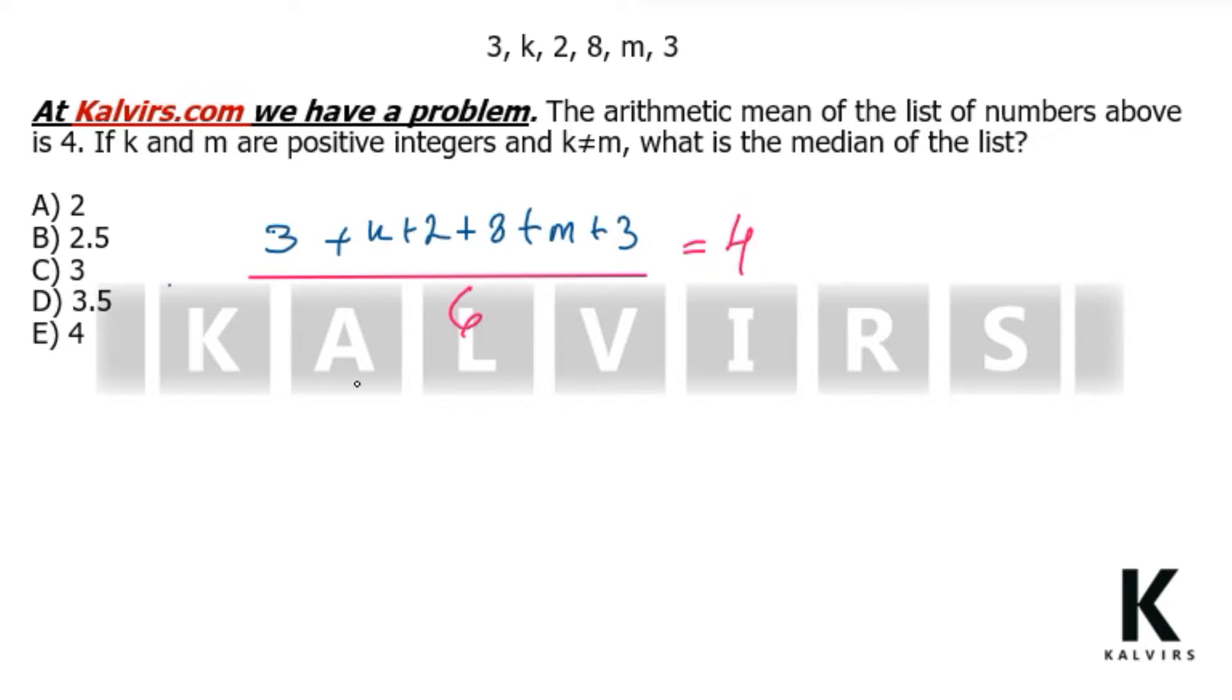If we solve this, we have 3 plus 2 is 5, plus 8 is 13, plus 3 is 16. 16 plus k plus m is equal to 24. It means that k plus m is equal to 8.